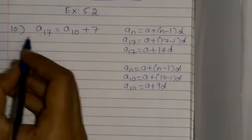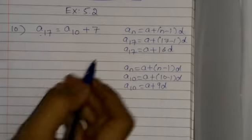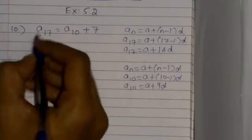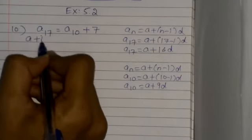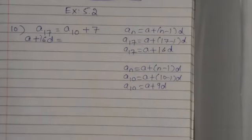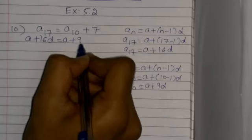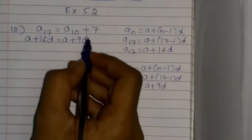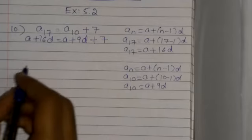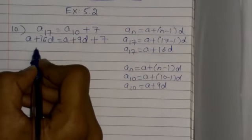Now we can write a17 as a + 16d, and this equals a10, which is a + 9d, plus 7. So a + 16d = a + 9d + 7.